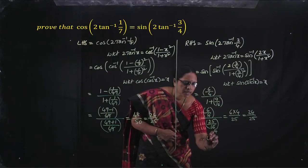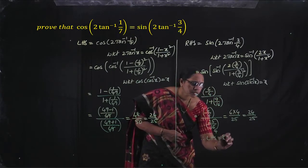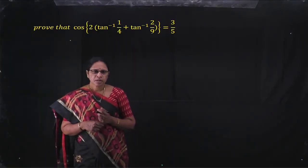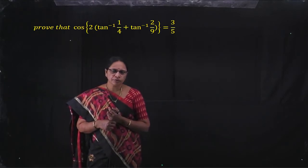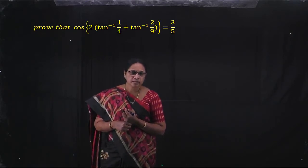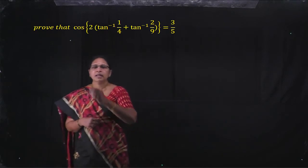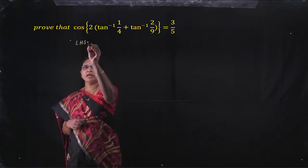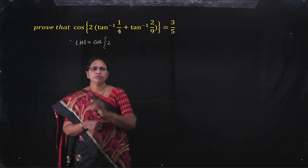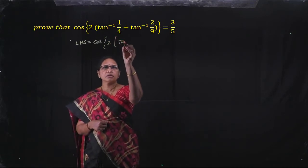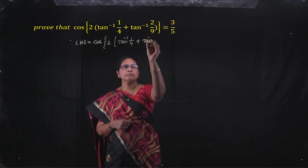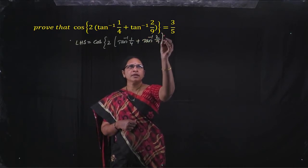Therefore LHS is equal to RHS. See the next problem: prove that cos of 2 of tan inverse 1 by 4 plus tan inverse 2 by 9 is equal to 3 by 5. Take LHS of this problem: LHS is equal to cos of 2 of tan inverse 1 by 4 plus tan inverse 2 by 9.